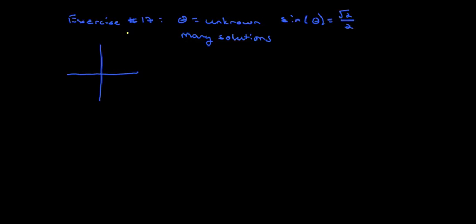If you think about what the angle looks like, we'll draw it here in yellow. We know that sine is square root of 2 over 2 at 45 degrees. We also know that sine is square root of 2 over 2 at 135 degrees. So we've got those two angles.